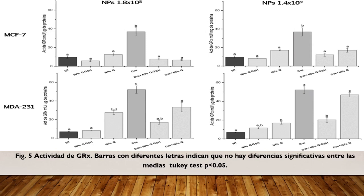La glutatión reductasa es una enzima constitutiva, activa e inducible bajo estrés oxidante, encargada de la regeneración del GSH a partir del glutatión disulfuro en una reacción donde se utiliza NADPH. La exposición a nanopartículas de quitosán con glutatión en las dos concentraciones y en las dos líneas celulares no modificó los niveles de esta enzima, lo que sugiere que no hay un desequilibrio redox celular por las nanopartículas. Sin embargo, la exposición combinada con doxorrubicina disminuyó significativamente su actividad, probablemente porque las nanopartículas redujeron las especies reactivas de oxígeno, disminuyendo así el requerimiento de regeneración de GSH.